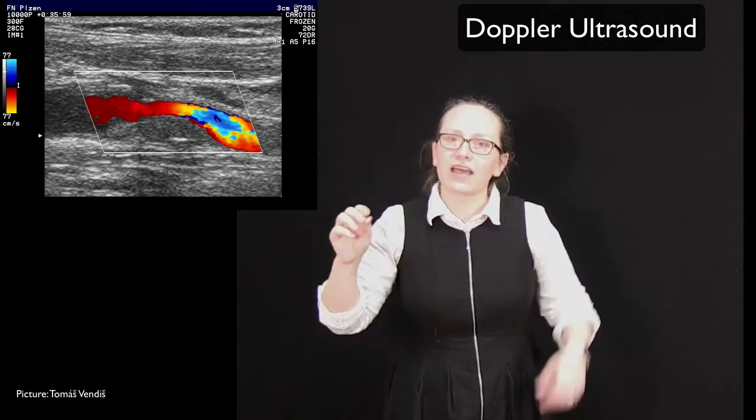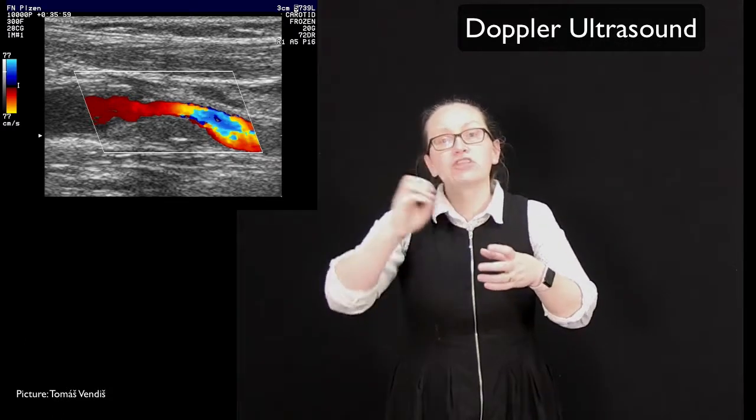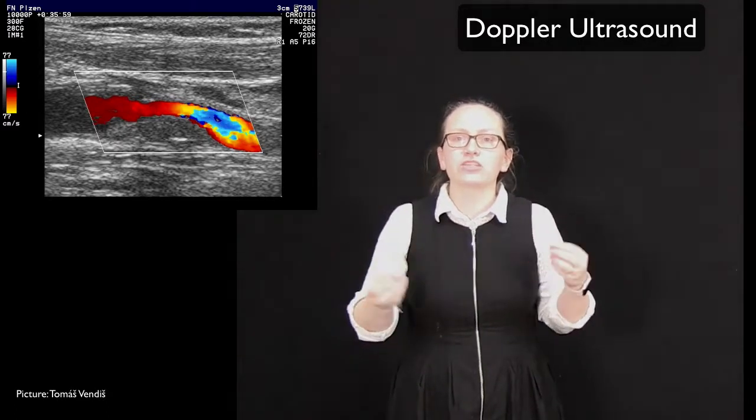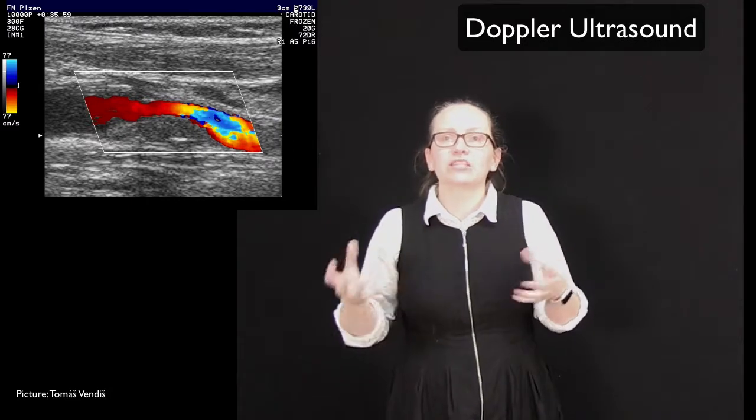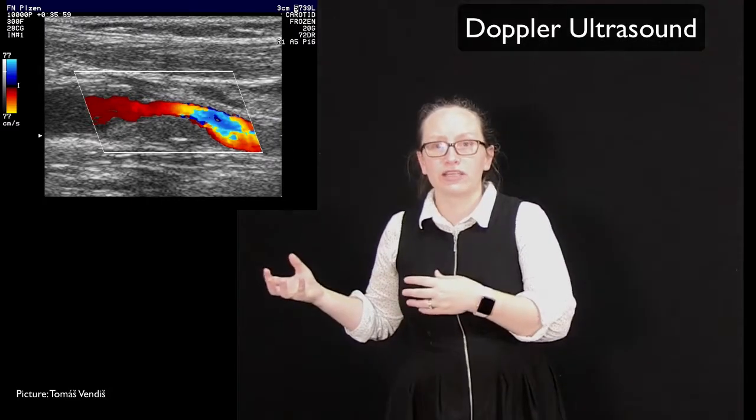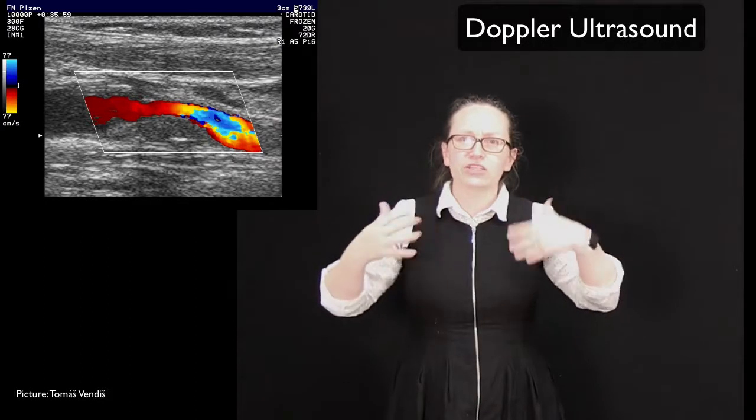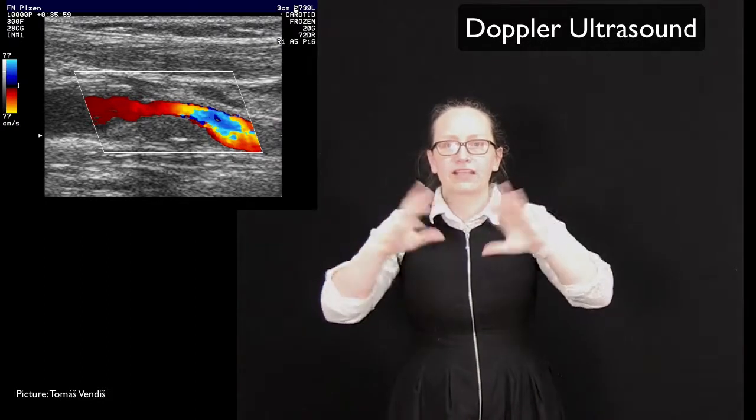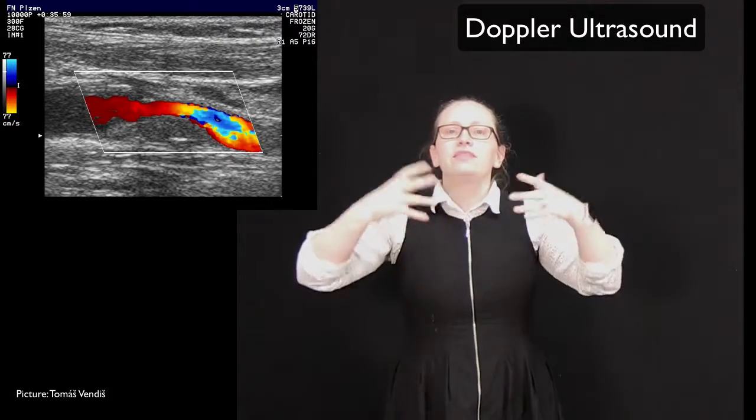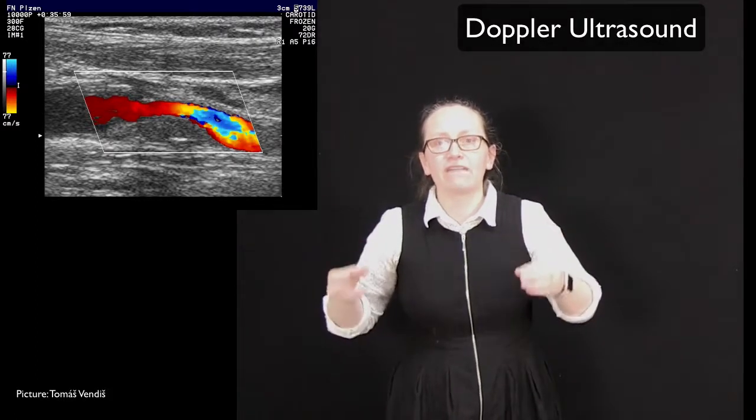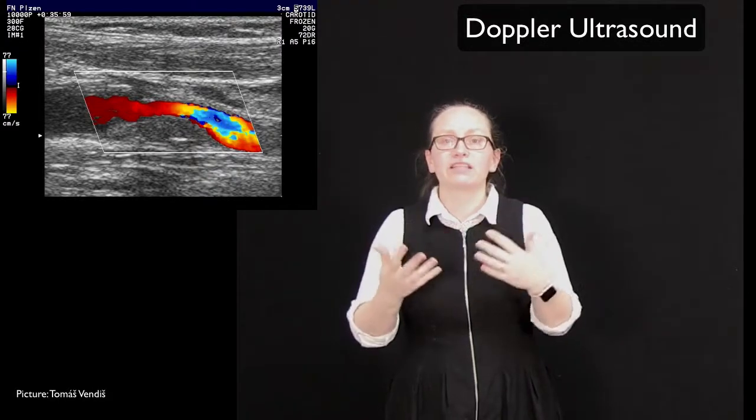The Doppler ultrasound detects the change in frequency of the reflected waves, and this is really useful when doctors need to know how quickly blood is flowing through veins or arteries. So in conditions like deep vein thrombosis, which is where the arteries or veins get clogged up, this is a very useful type of scan to have to detect if the blood is flowing normally or not.